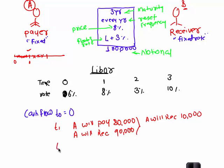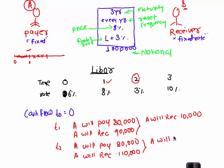Second year, time 2. A will pay how much? This will not change. A will still pay 80,000. A will receive how much? Now if you are doing this settlement at time 2, then the rate that we use is of time 1. So 8 plus 3, he will receive 110. That means net A will receive 30,000.